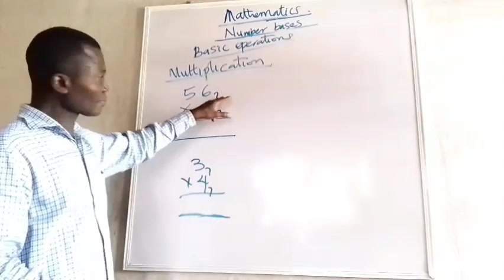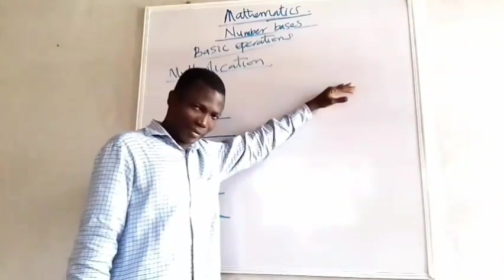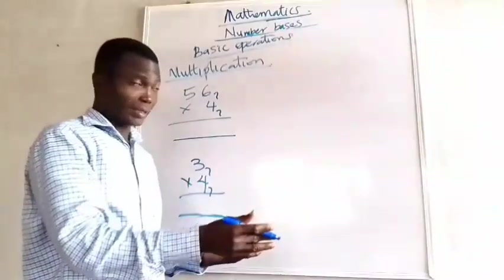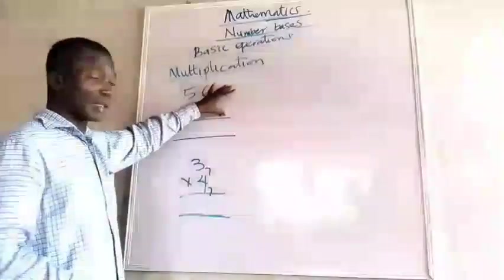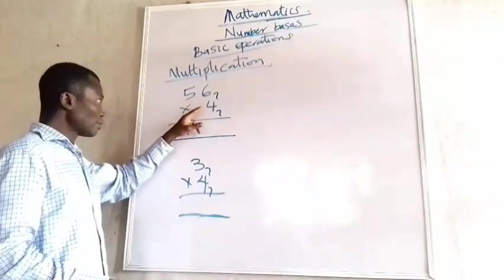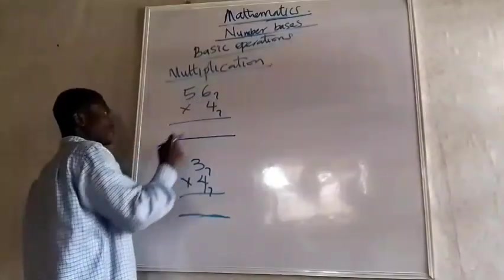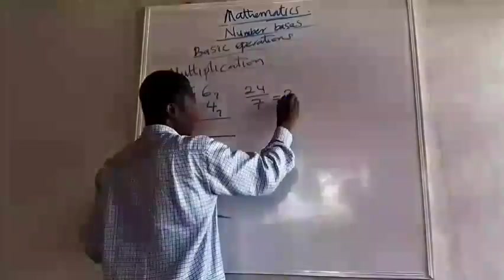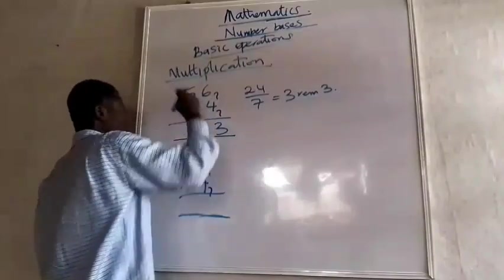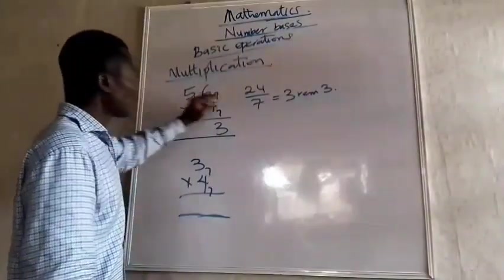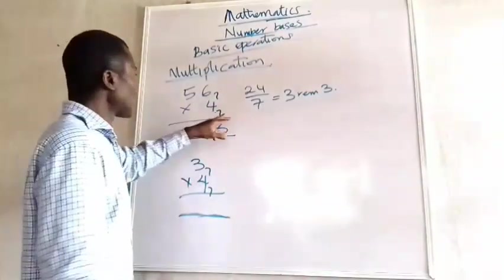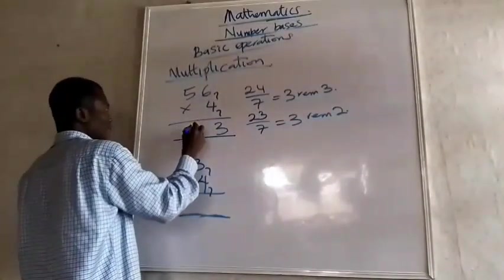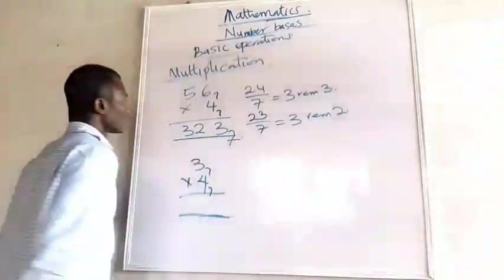For example, 56 base 7 multiplied by 4 base 7. Working directly: 6 times 4 is 24. Under base 7, I divide 24 by 7 — that gives 3 remainder 3. So I write 3 and carry 3. Now 5 times 4 is 20 in base 7, plus carried 3 is 23; 23 divided by 7 is 3 remainder 2. So the result so far gives digits 3, 2, 3 in base 7.